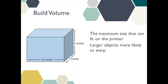There are a few other things to be aware of. When selecting your project, it's important to keep the build volume in mind. This is the maximum physical size that can fit in our printer. The MakerBot Replicator Plus has a build volume of approximately 11 inches by 7 inches by 6 inches. Please be aware that very large items are more likely to warp during the printing process.